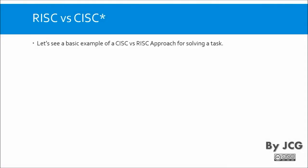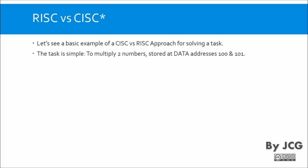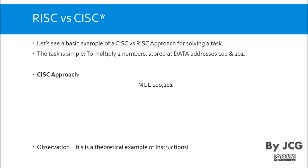Now let's see a basic example of a CISC versus RISC approach for solving a task. The task is simple: we need to multiply two numbers stored at data addresses 100 and 101. This is a theoretical example. The CISC approach simply uses one instruction with the direct addresses 100 and 101, and the microprocessor performs the task.